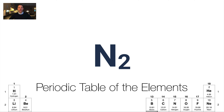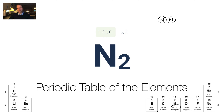Let's do another example: N2. In this case I have two nitrogen atoms bonded together — a covalent bond. Finding nitrogen on the periodic table gives 14.01. So 14.01 plus 14.01, or times 2, gives 28.02 grams per mole. That means a mole of N2 has a mass of 28 grams.